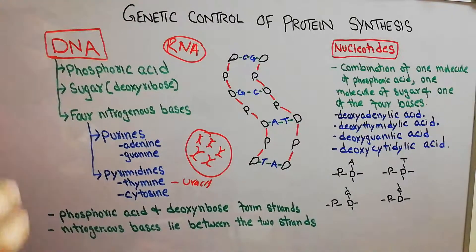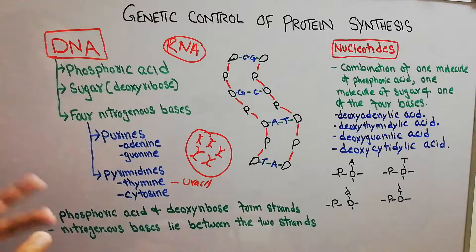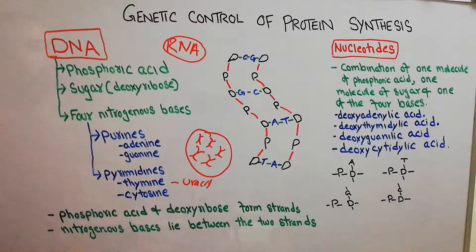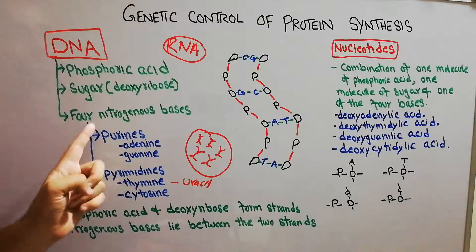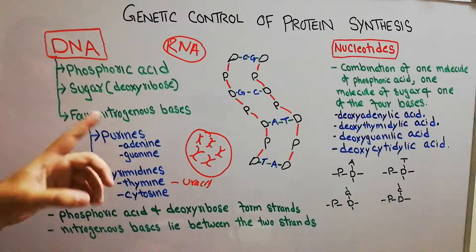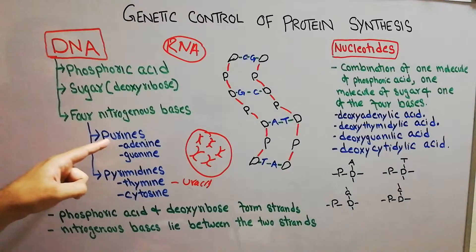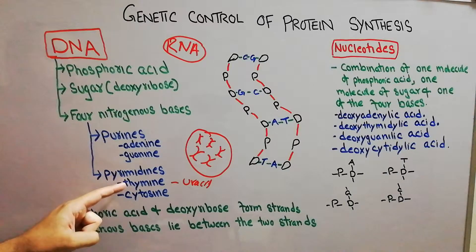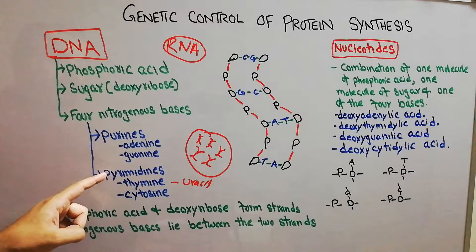Inside the human cell, in the nucleus, DNA is present in the chromatin and chromosomes. There are three important molecules forming the basic structure of DNA: phosphoric acid, deoxyribose sugar, and one of the nitrogenous bases. A useful mnemonic to remember the purines is 'pure as gold' — purines: adenine, guanine. To remember the pyrimidines: 'pyramids of Turkey and Cairo' — pyrimidines: thymine and cytosine.